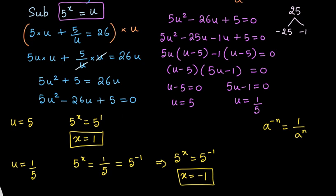So we have two values of x: x can be 1 and negative 1. This is the solution. In competitive exams, if this kind of question appears and you have options, you need not solve it the lengthy way — you can just substitute the values of x in the equation and verify. I hope all of you enjoyed the solution.